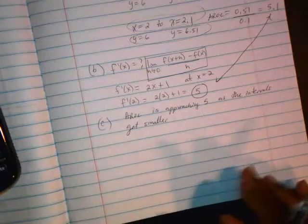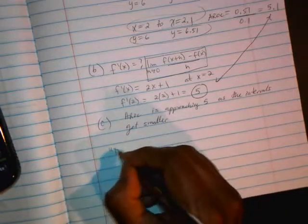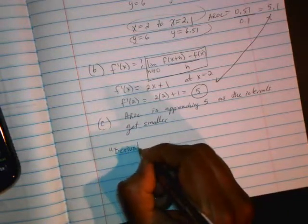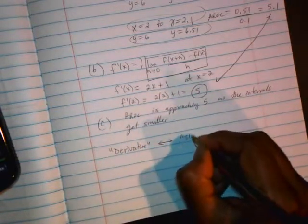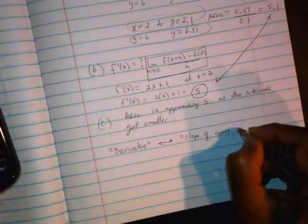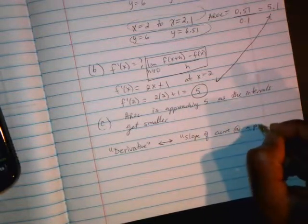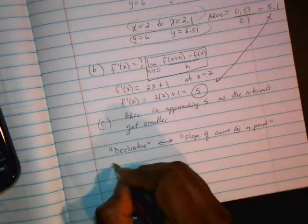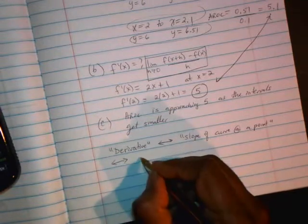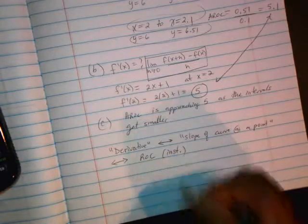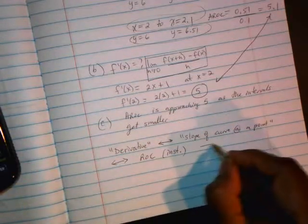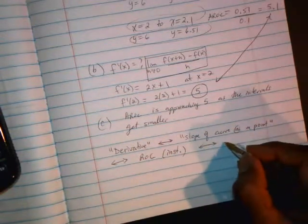So from now on, if you see the word derivative, it should be synonymous with slope of a curve at a point, and it should be synonymous with rate of change, instantaneous rate of change. And you can also think of it as slope of a tangent line.